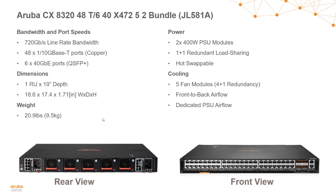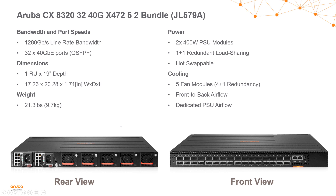The next switch in the series is the 10 gig Base-T model — pretty much the same as the SFP+ model, except it uses 10 gig Base-T copper ports supporting 1 and 10 gig. It has the same dimensions, two power supplies, and five fan trays in the back. Finally, the 32-port 40-gig model supports 1.2 terabits of line-rate bandwidth, has 32 40-gig QSFP+ ports, and likewise has two power supplies and five fan trays doing front-to-back airflow.